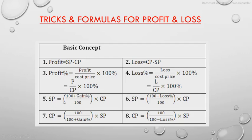For finding SP when gain percent and CP are known: SP = ((100 + gain%) / 100) × CP. If loss is given: SP = ((100 − loss%) / 100) × CP. To find CP when SP and gain% are given: CP = (100 / (100 + gain%)) × SP. If loss is given: CP = (100 / (100 − loss%)) × SP. These are basic formulas that need to be remembered to solve questions very easily.